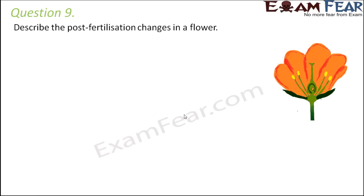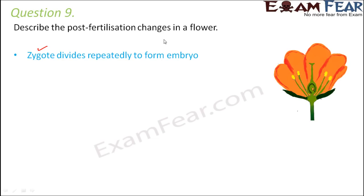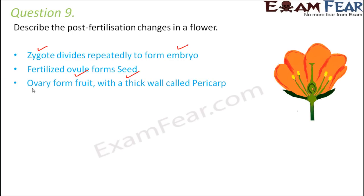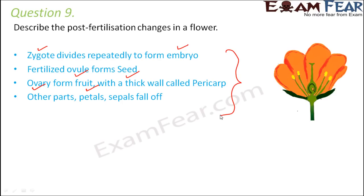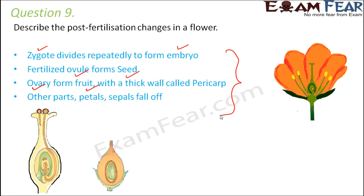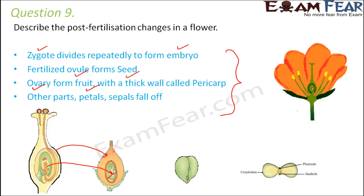Question number nine: describe the post-fertilization changes in a flower. After fusion has taken place, the zygote undergoes repeated divisions to form the embryo. The fertilized ovule turns into the seed, and the ovary becomes the fruit with a thick wall called the pericarp — like the outer covering of a mango. Other parts like petals and sepals fall off. As shown in the picture, the ovary turns into the fruit, the ovule turns into the seed, and the zygote turns into the embryo inside the seed.